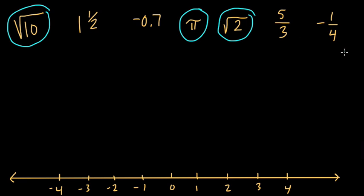Every other number here is rational: 1 and a half, negative 0.7, any terminating decimal like 0.7. Any simple fraction is automatically rational.